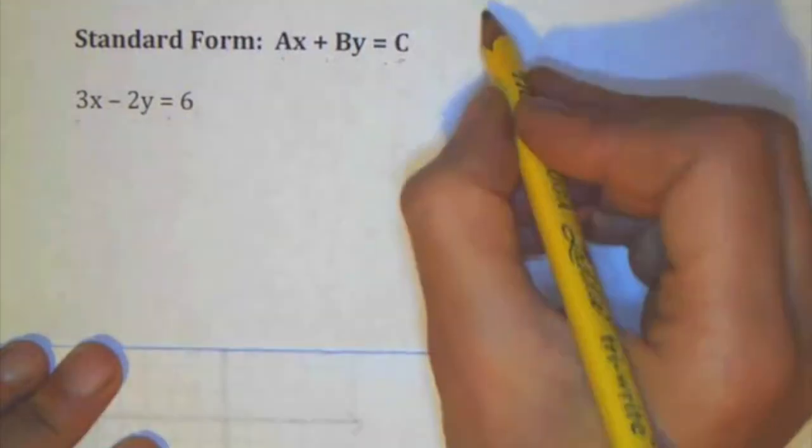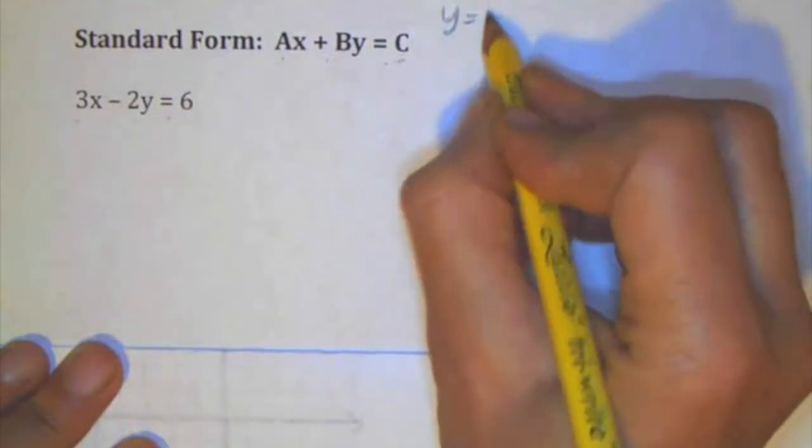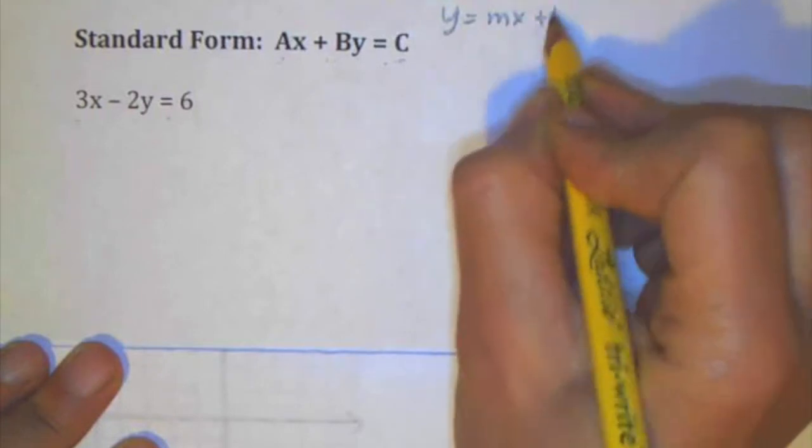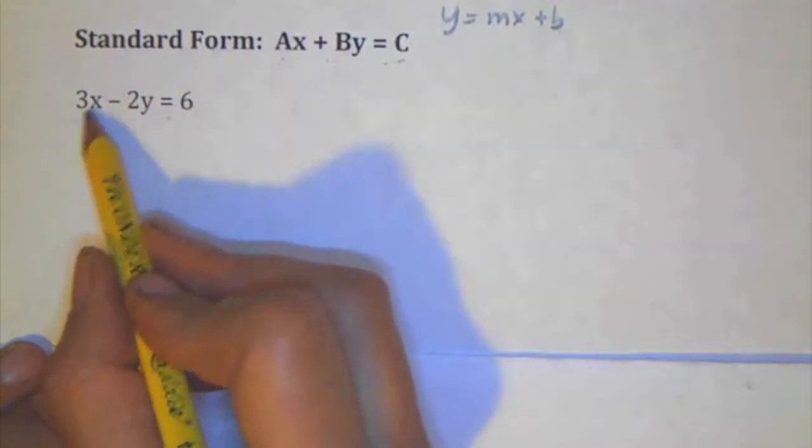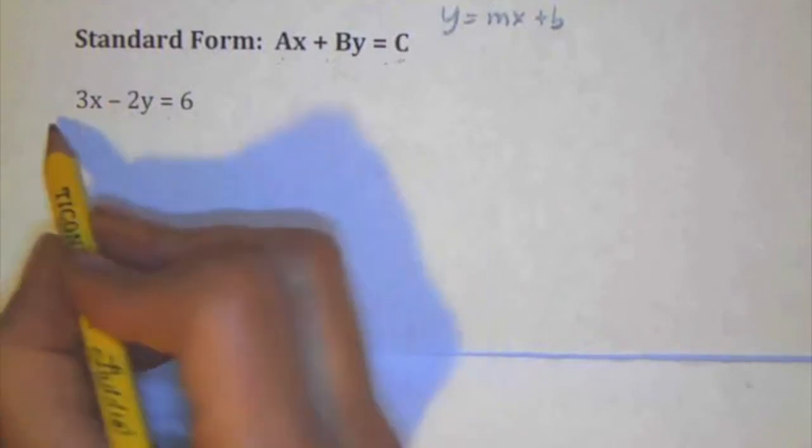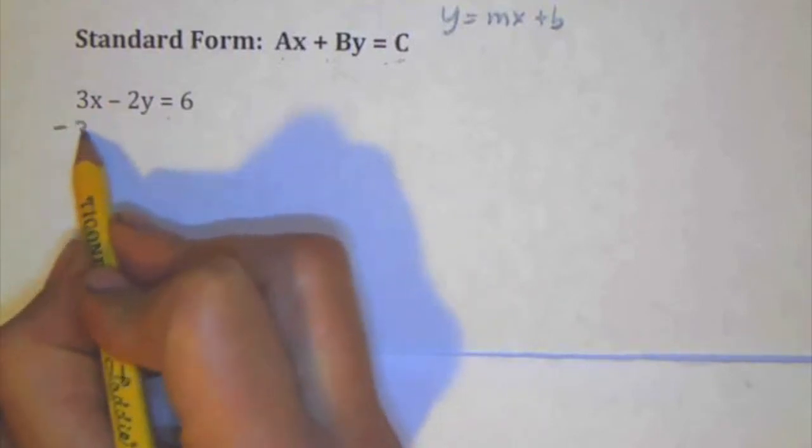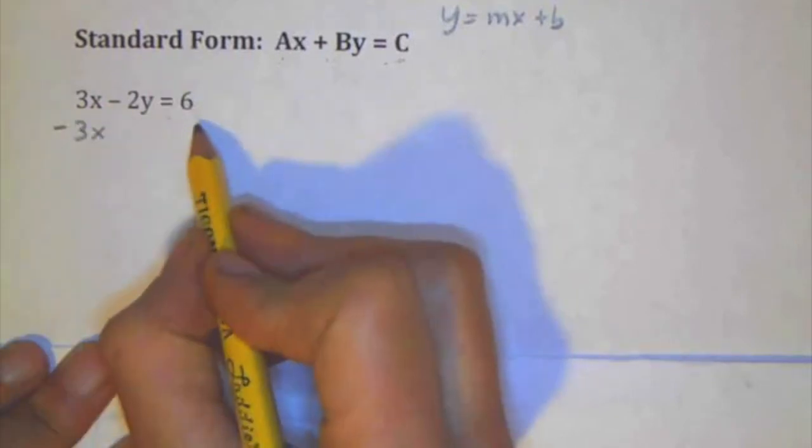Now, what we're trying to do is get into slope-intercept form. Once again, that is y equals mx plus b. So what I like to do is I ask myself, is y by itself? No, it's not. It's got this x that I need to deal with. So in order to get rid of that, I'm going to subtract 3x from both sides.